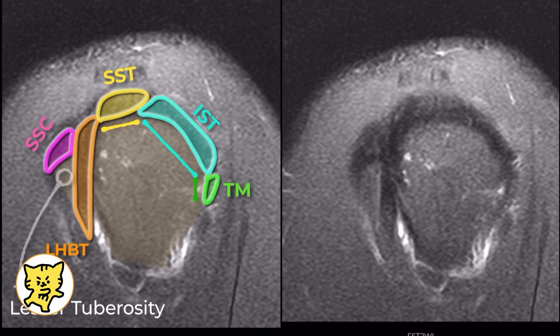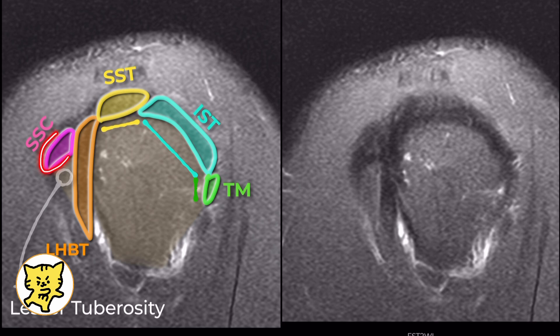First, focus on the long head of the biceps tendon. Just in front of it, you'll see the subscapularis tendon attached to the lesser tuberosity.